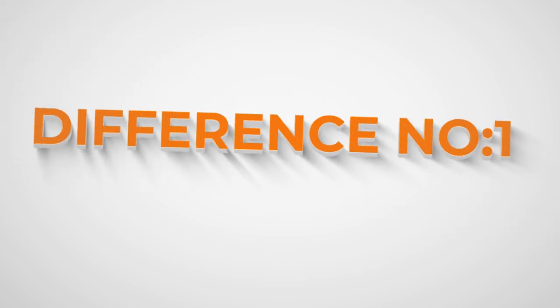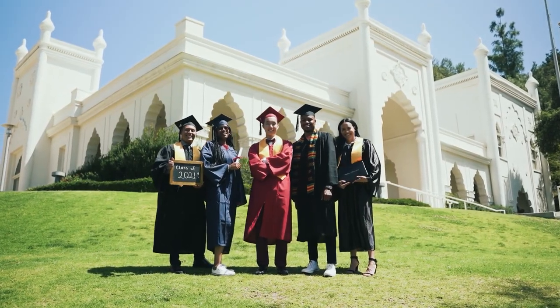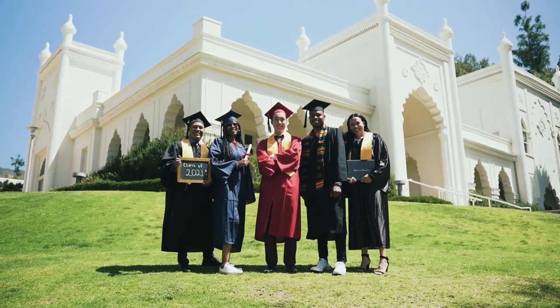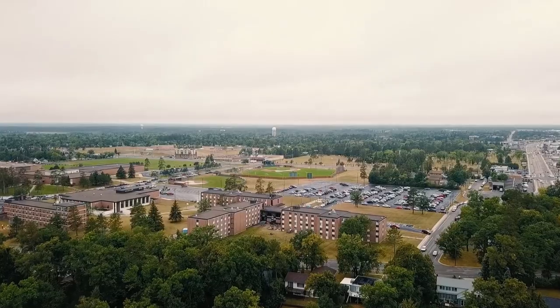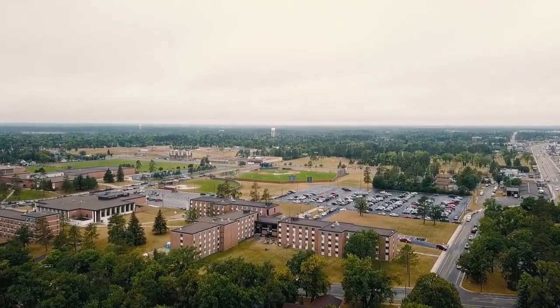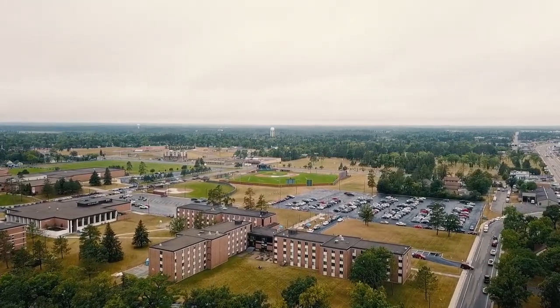The first difference between college and university is campus size. If we have a college, we have a single domain — for example, an engineering college, management college, commerce college, or law college — so the campus size is smaller. In a university, we have a college of engineering, college of management, college of law, and college of commerce all together, so the campus size of a university is larger compared to a college.